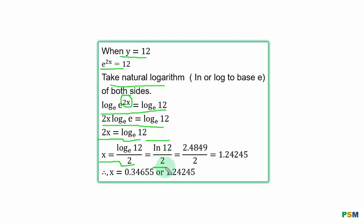So you have log base e of 12 over 2 to be the same as ln 12 over 2, and you have 2.4849 divide by 2, and that is 1.24245. Therefore, x = 0.34655 or 1.24245.